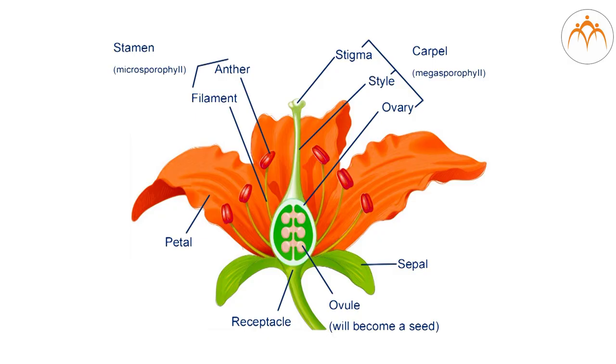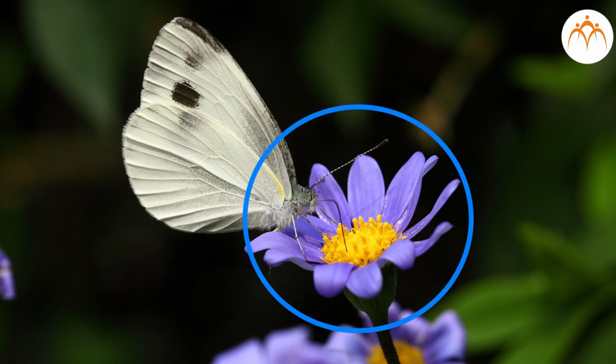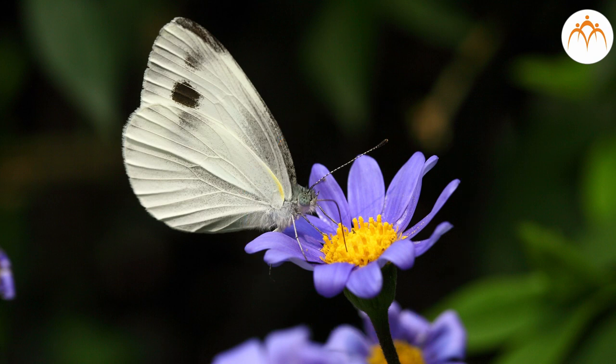Inside the calyx are petals. This part is called the corolla. Usually, petals are large and colorful. Many a time, we see insects visiting flowers to collect nectar. Colorful petals attract insects towards flowers.